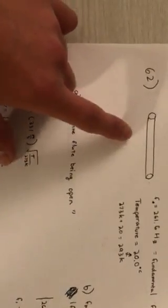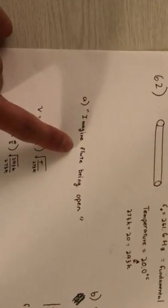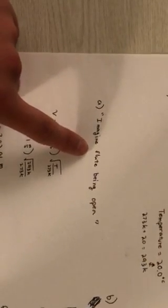So to solve for part a, even though the problem states that the flute is closed, they want us to assume that it is open. To find the length first we have to find what the speed of sound is in that room.